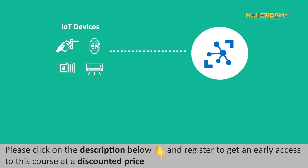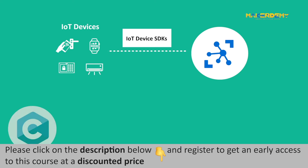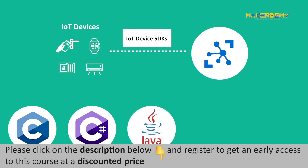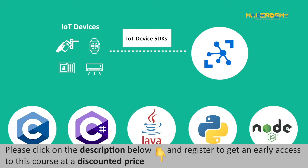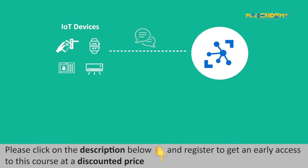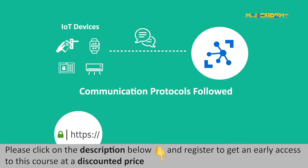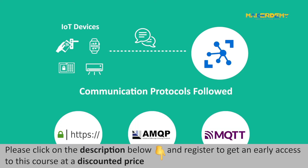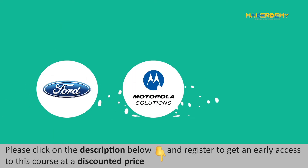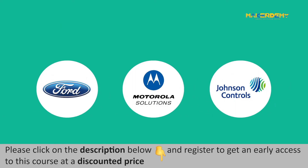Applications for IoT devices connected to the Azure IoT Hub can be written in languages like C, C#, Java, Python, or Node.js. Communication between IoT devices and Azure IoT Hub is via any of the following protocols: HTTPS, AMQP, or MQTT. Many companies like Ford Motors, Motorola Solutions, and Johnson Controls use the Azure IoT Hub.